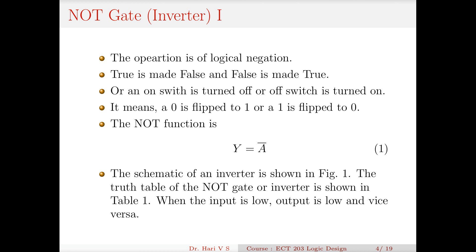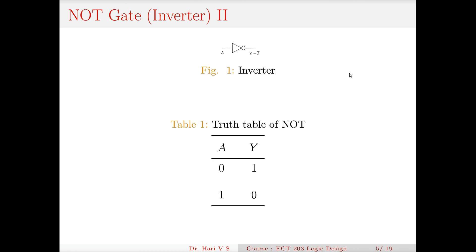The schematic of an inverter is shown here. The truth table of the NOT gate is also shown. The schematic is a triangle followed by a dot — this is A, and this is A-complement. The truth table: if A is the input and Y is the output, when A equals 0, Y equals 1; when A equals 1, Y equals 0.